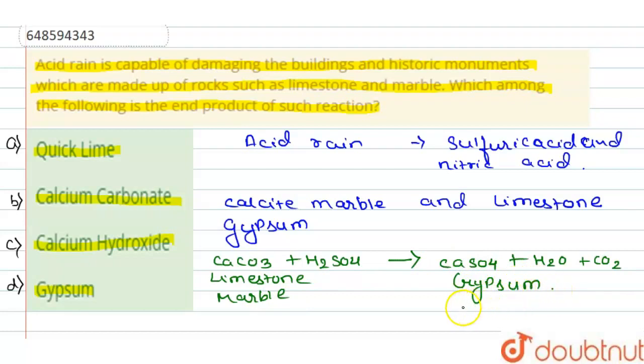So the end product of the acid rain reaction, the acid rain and marble reaction, the end product is option D, gypsum.